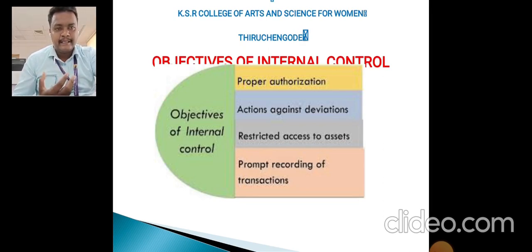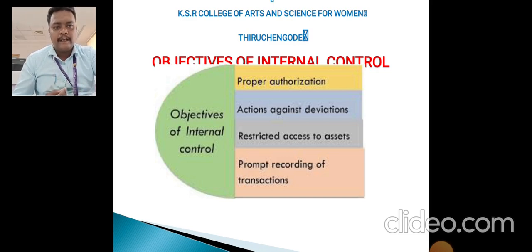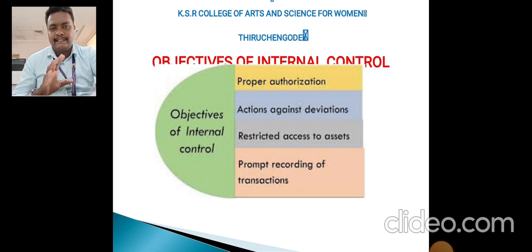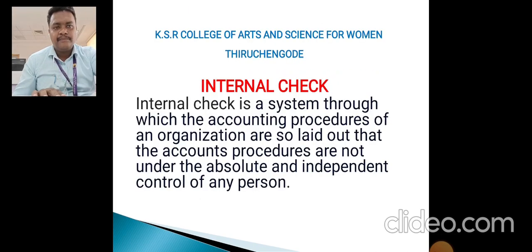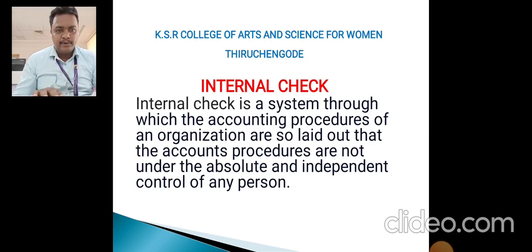The objectives of internal control are: first, proper authorization; second, action on deviations; third, restriction of assets; and fourth, prompt recording of transactions. These are the important objectives of internal control.